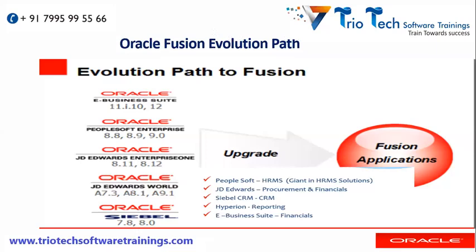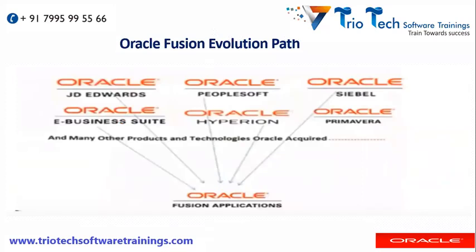Prior to Fusion, Oracle's existing product was E-Business Suite, and PeopleSoft, JD Edwards, and Siebel had their own applications. Though EBS, PeopleSoft, JD Edwards, and Siebel are now under Oracle, clients on those technologies still receive Oracle support. But soon Oracle will stop that support and all clients are moving towards Oracle Fusion — which Oracle is actively suggesting as the upgradation product that is strong across all modules: HRMS, procurement, financials, CRM, reporting, and PPM. Oracle Fusion Applications is a club of all those products — PeopleSoft, Siebel, Hyperion, EBS, and JD Edwards.